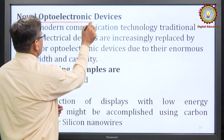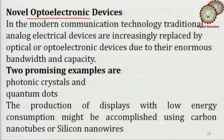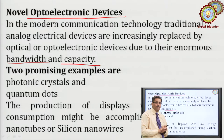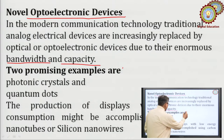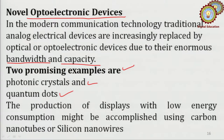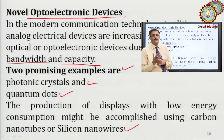Optoelectronics is another field combining optics and electronics. Optoelectronic devices are being developed for modern communication technology, increasingly replacing traditional analog electrical devices due to their enormous bandwidth and capacity. Two key examples are photonic crystals and quantum dots. The production of energy-efficient displays may be achieved using carbon nanotubes or silicon nanowires, resulting in devices that are more efficient with lower power consumption.